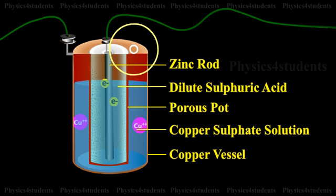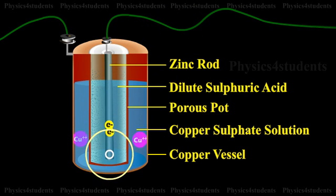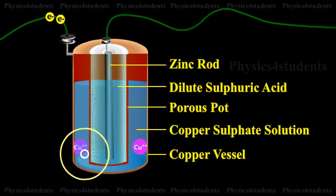When Daniel cell is connected in a circuit, the two electrons on the zinc rod pass through the external circuit and reach the copper vessel, thus neutralizing the copper ions.